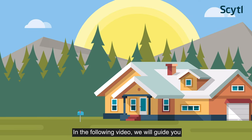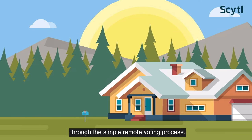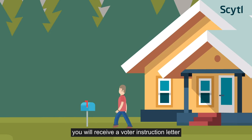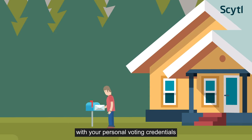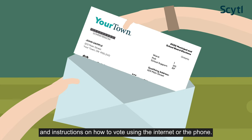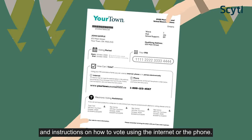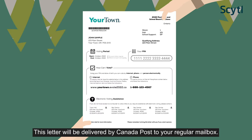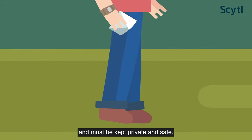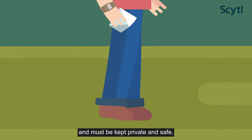In the following video, we will guide you through the simple remote voting process. Before the election, you will receive a voter instruction letter with your personal voting credentials and instructions on how to vote using the Internet or the phone. This letter will be delivered by Canada Post to your regular mailbox. Remember that this document belongs only to you and must be kept private and safe.